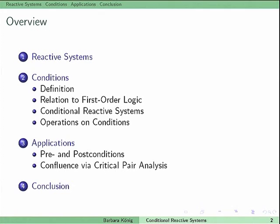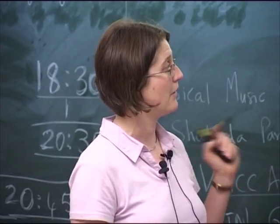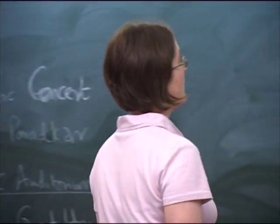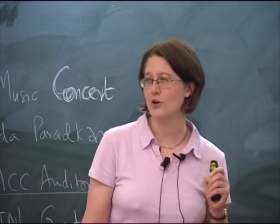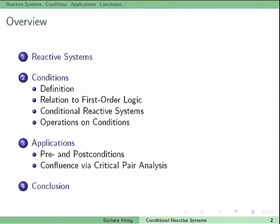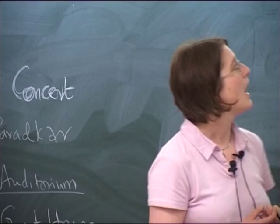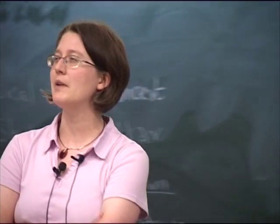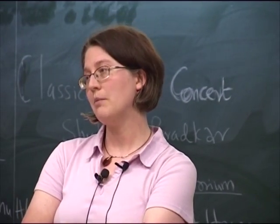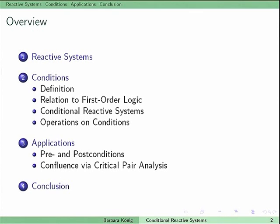Here is the overview. I'll first talk about reactive systems in the sense of Leifert and Milner, which is an abstract framework of rewriting. Then I'll talk about the conditions in the title — I'll define them and relate them to first-order logic. Then I'll say what conditional reactive systems are and discuss operations on conditions. We also have two applications: computing pre- and post-conditions, and confluence via critical pair analysis. Then I'll conclude.